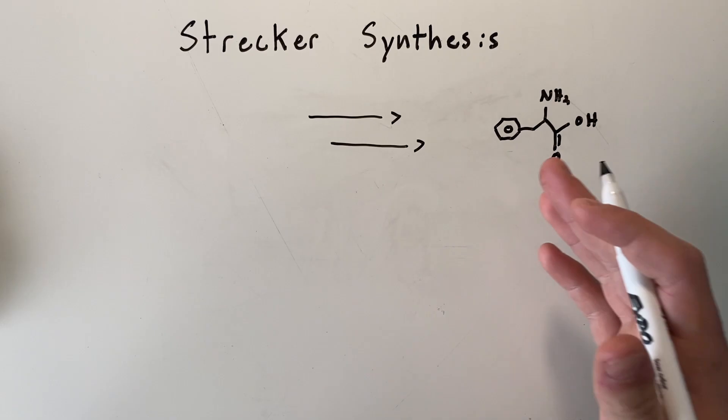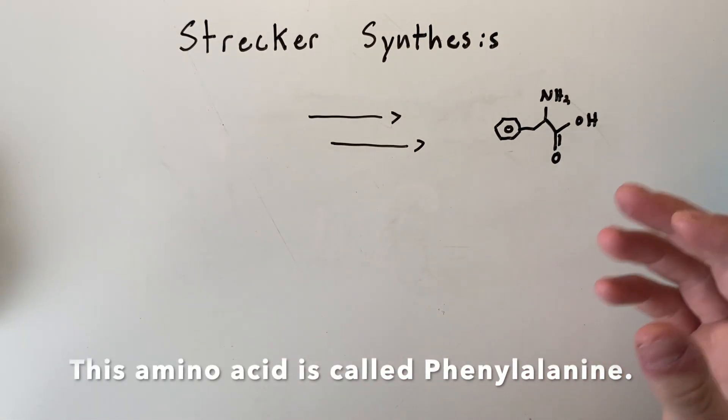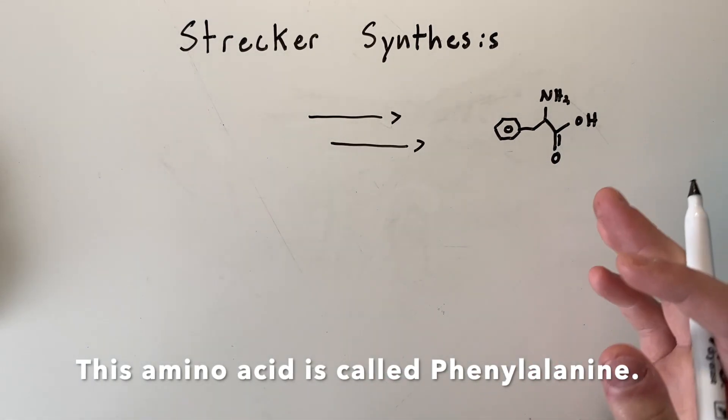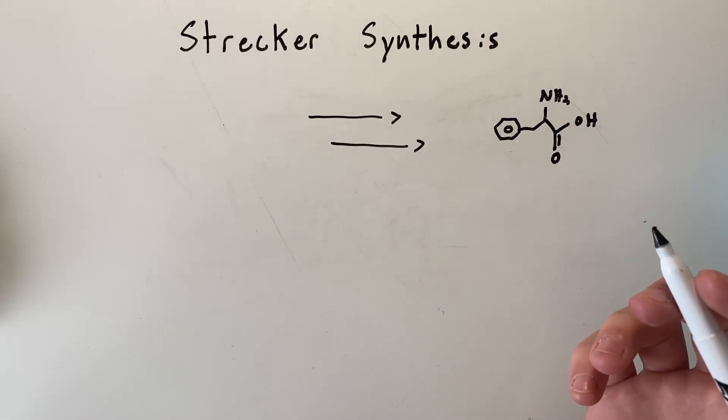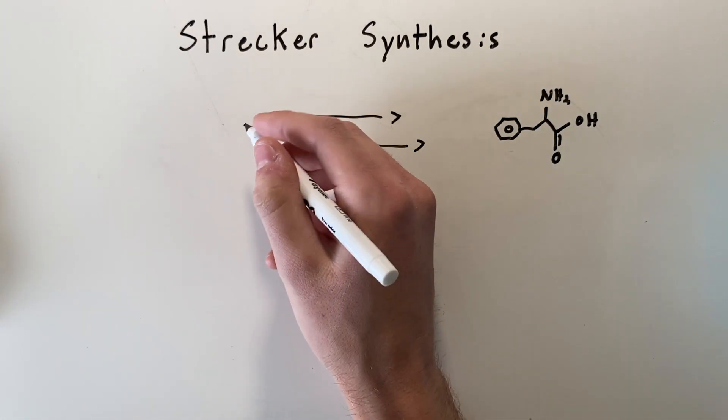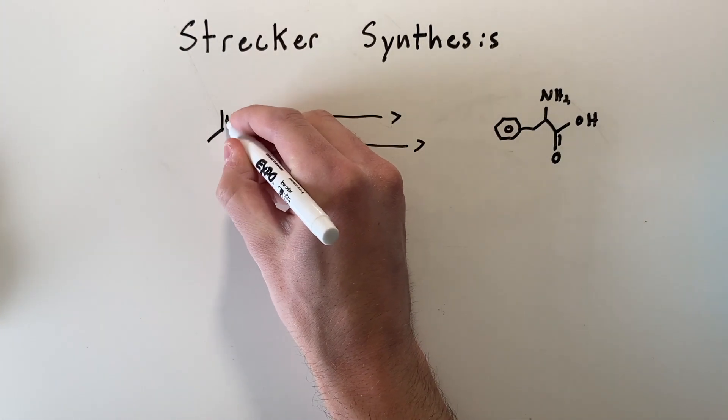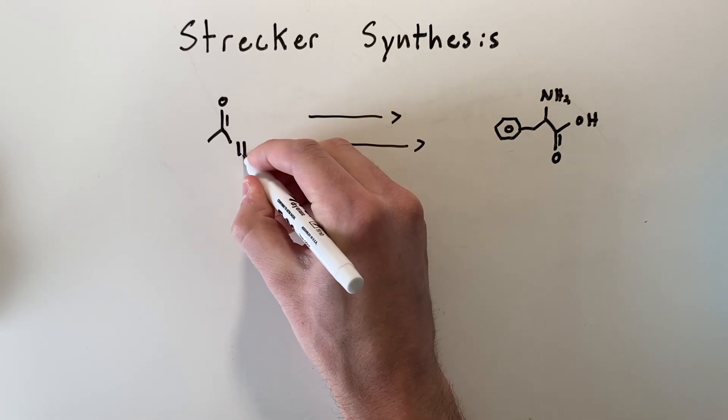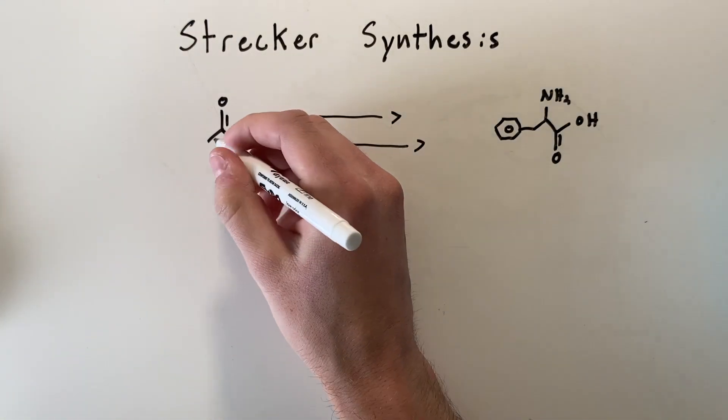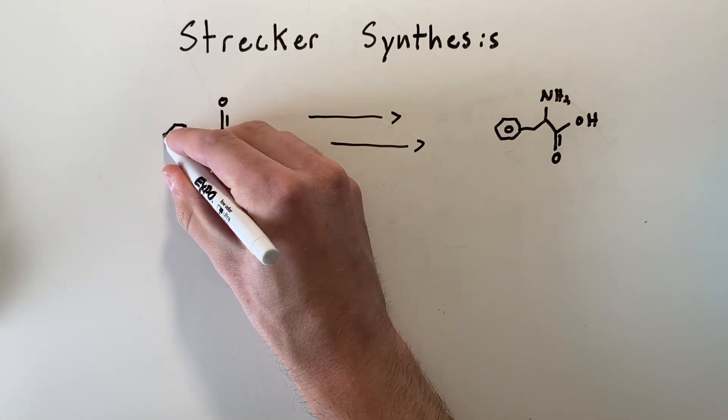So go ahead and pause the video and see if you can figure this one out. And just keep in mind that you want to start with an aldehyde in the Strecker synthesis always. Okay. So what we're going to do, start out with an aldehyde and we're going to go ahead and put our aromatic group here.